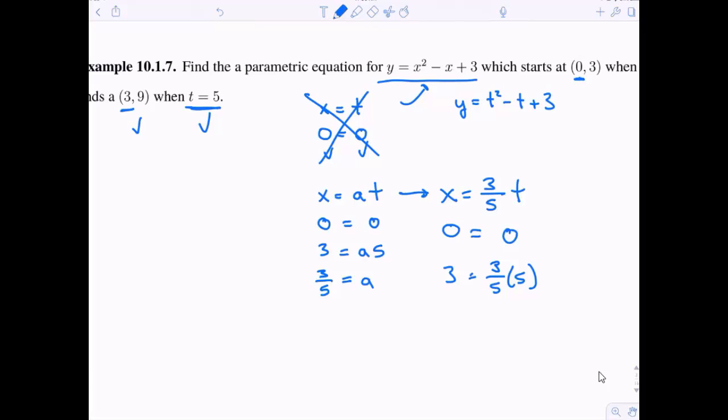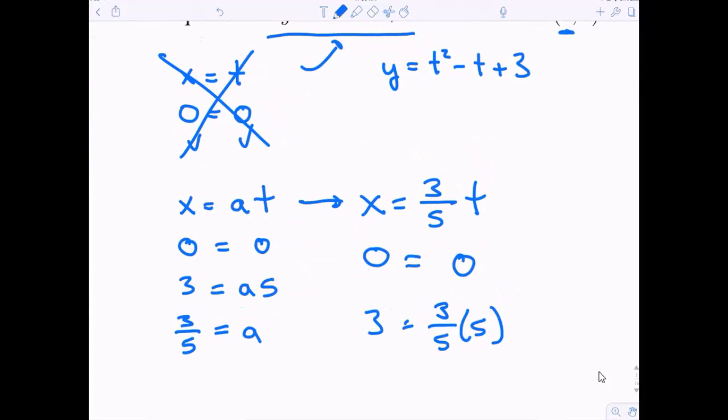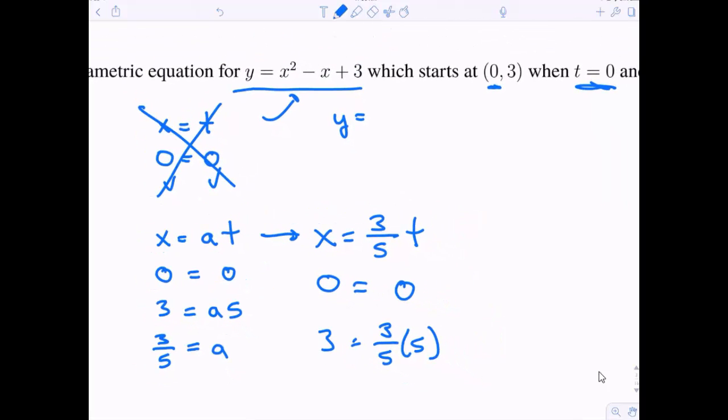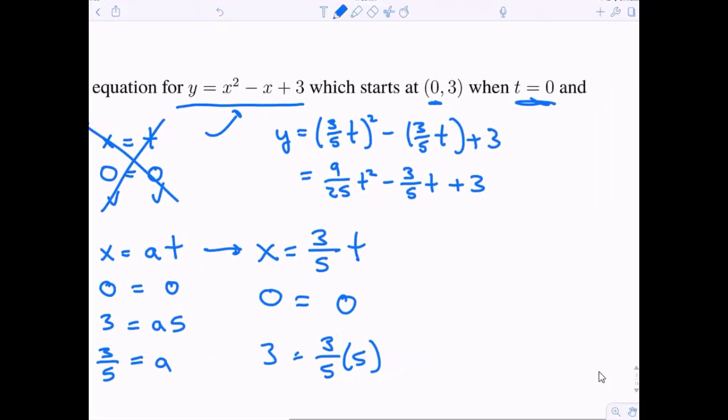Now all of our x values are set. How do we parametrize y? This equation up here will no longer be good because x isn't equal to t anymore. x is now equal to 3 fifths t. So everywhere I see an x, I'm going to plug in 3 fifths t. Let's simplify this. I get 9 over 25 t squared minus 3 fifths t plus 3.